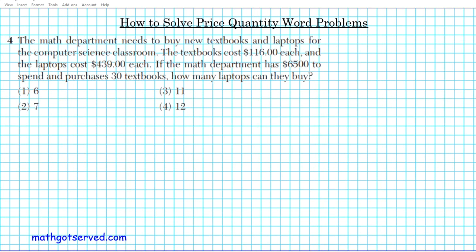In this problem we're going to learn how to solve price quantity work problems. Question four reads: the math department needs to buy new textbooks and laptops for the computer science classroom. The textbooks cost $116 each and the laptops cost $439 each. If the math department has $6,500 to spend and purchases 30 books, how many laptops can they buy?